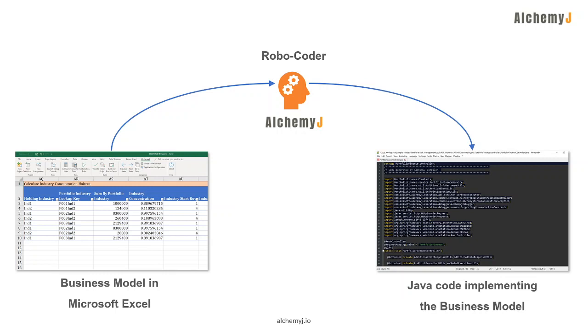In addition to the executable API, AlchemyJ could also give you all the source code of the API. You don't even need to write a single line of code and you get all the APIs done.